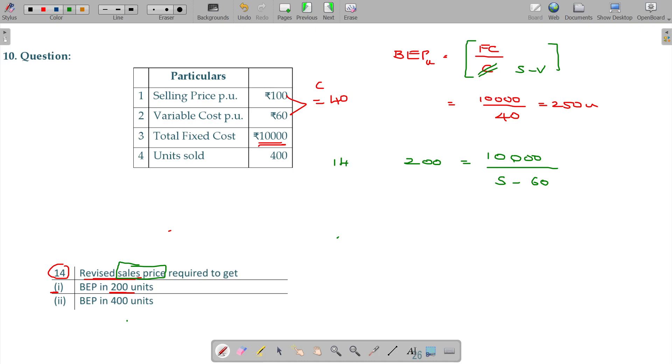Now do the cross multiplication. 200S minus 200 into 60 equals 10,000. So 200S minus 12,000 equals 10,000. Solving for S: S equals (10,000 plus 12,000) divided by 200.